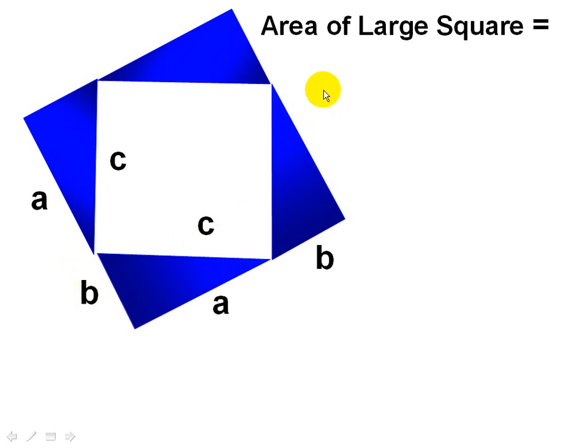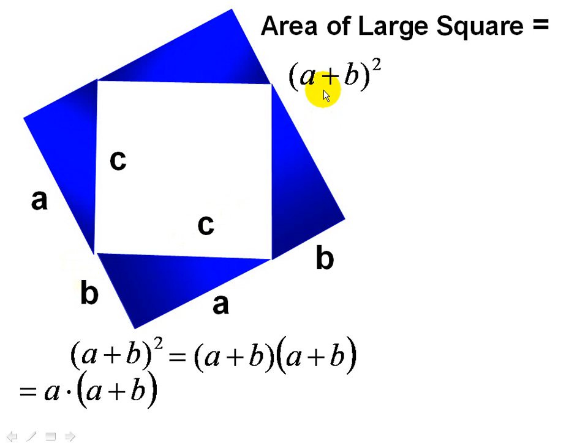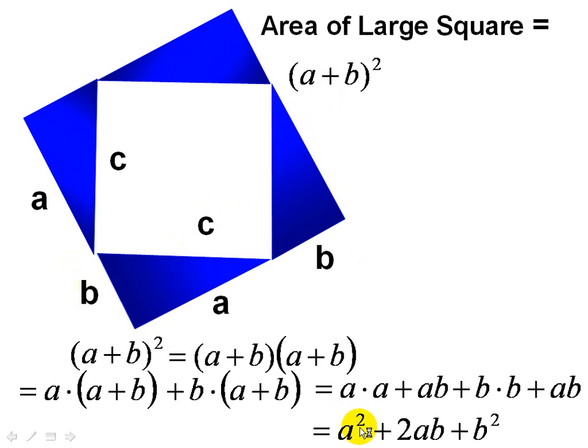Therefore, the area of the large square is A plus B squared, and we know that this reduces to or simplifies to A squared plus 2AB plus B squared.